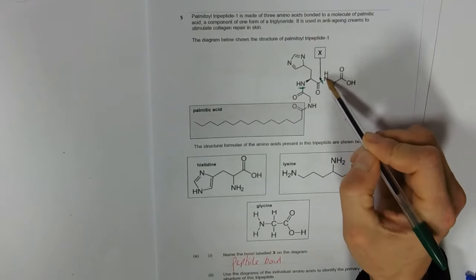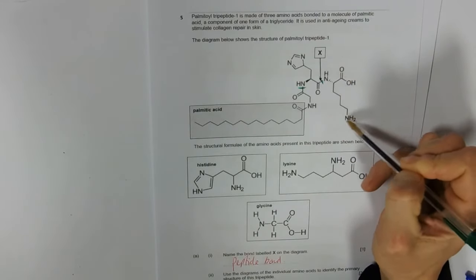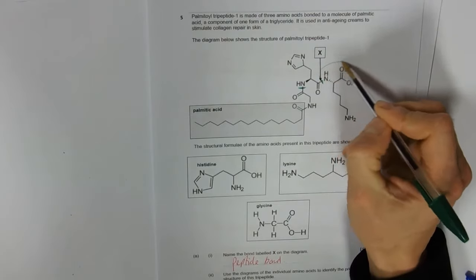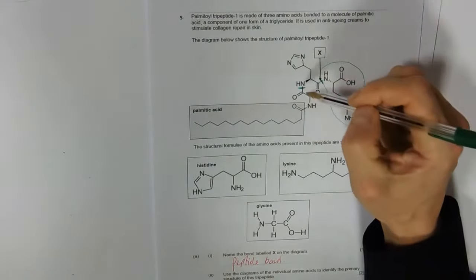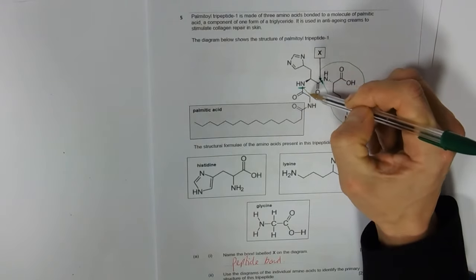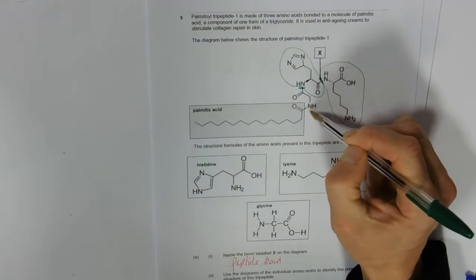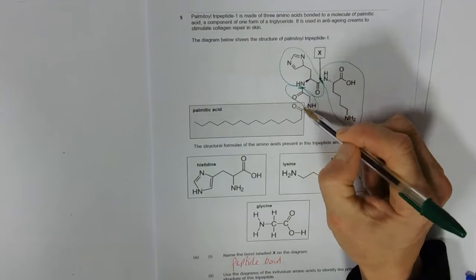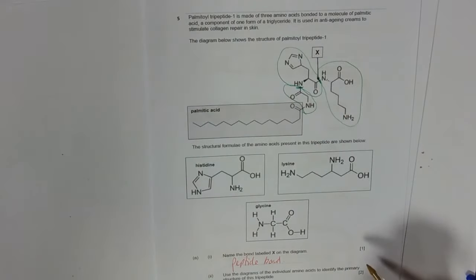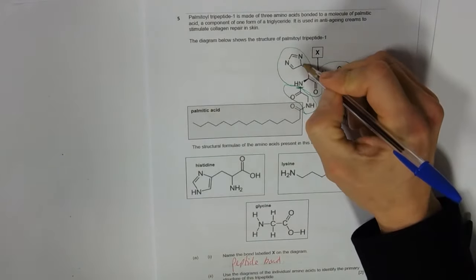So that would be the amino end of an amino acid, that's an acid end. This is a red herring - that's an R group. So we've got one there, this is one here, this is one here, this is one here. So those are our three amino acids, and this is the R group of one, that's an R group of another.